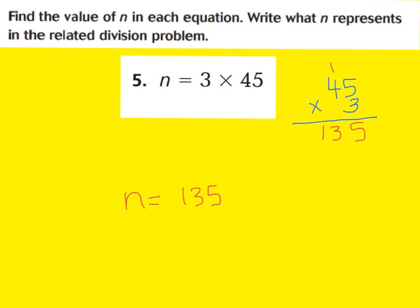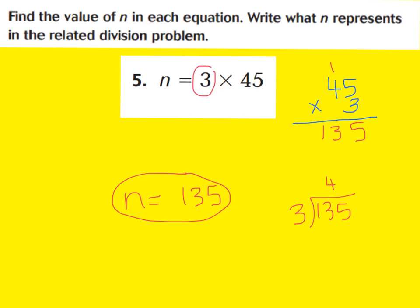What does this mean? This means that if I had a division problem, n would be my dividend — what I started out with. 135 divided into how many groups? 3 groups would give how many in each group? 3 times 45 is 135. Therefore, 135 divided by 3 is 45.